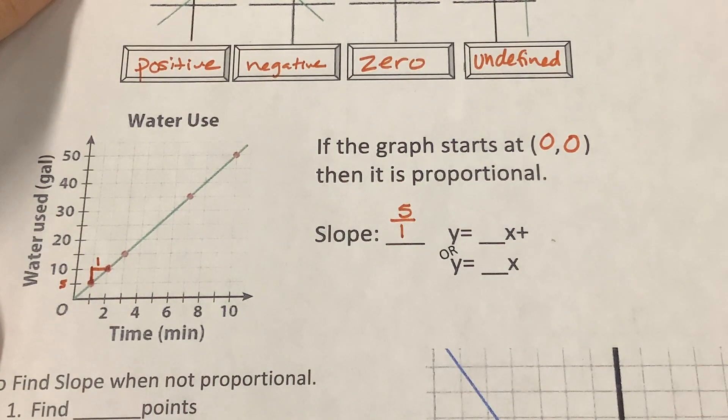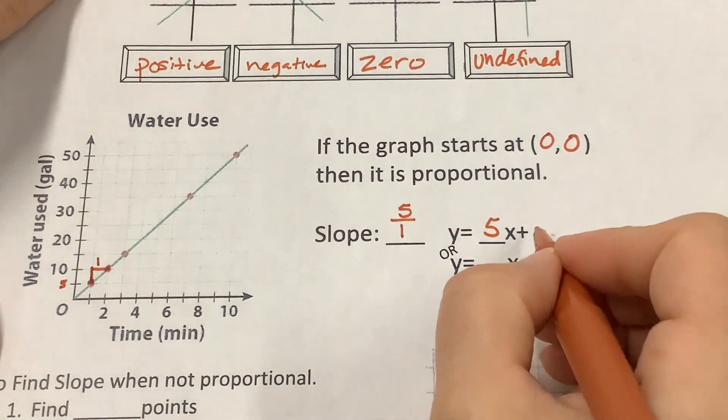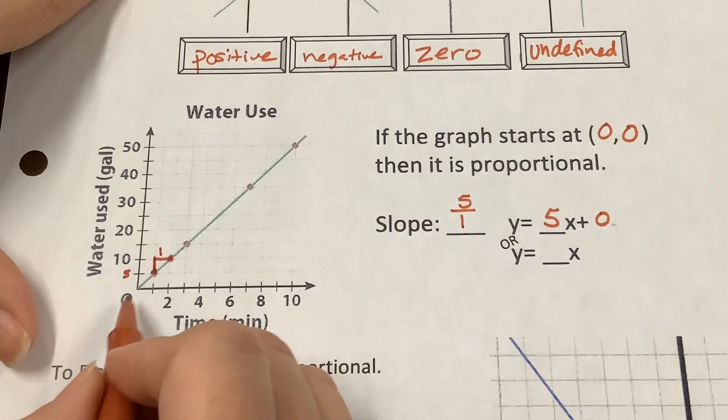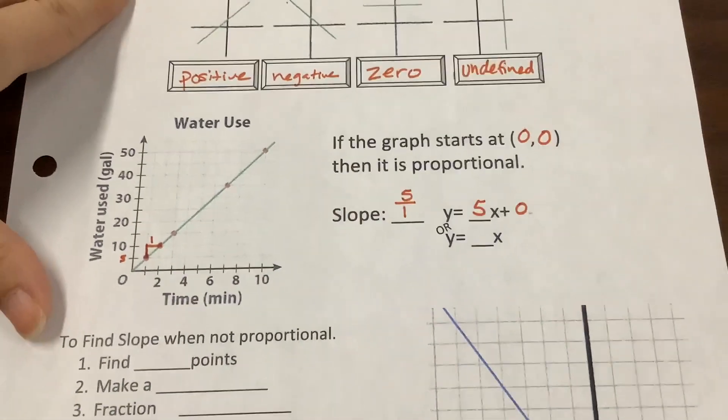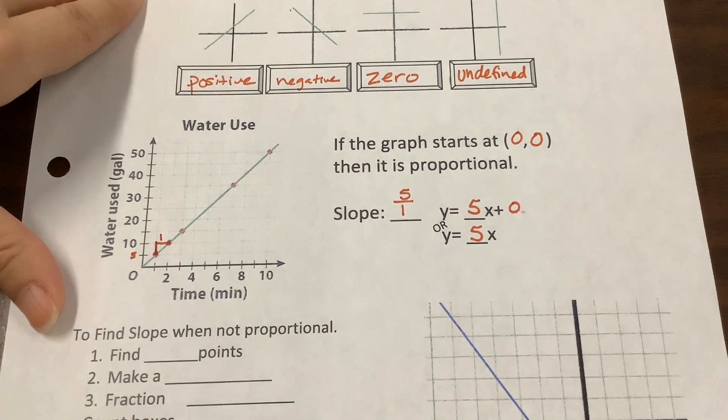Well, five over one is just the whole number five, right? We could write 5x plus 0 because we're showing that it's going through the origin, and 0 is for the origin. But also, we could just write y equals 5x. We don't need to write the plus 0.